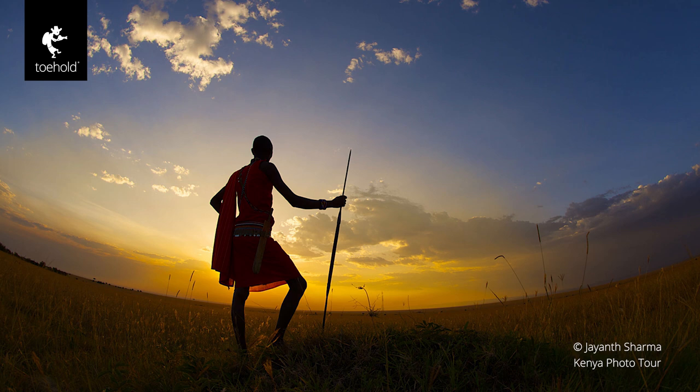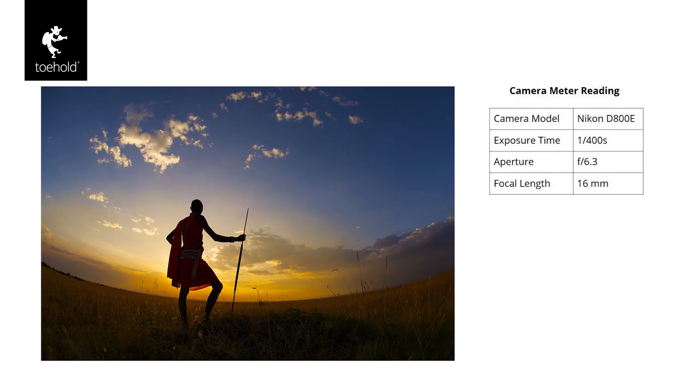Let's say I'm shooting a silhouette of a Maasai warrior against the sky and the camera's exposure is not satisfactory — I don't have to go to manual mode to make changes. Let's look at this picture shot at f/6.3 on a Nikon D800E with a 16mm fisheye lens at a shutter speed of 1/400th of a second according to the camera's meter. What if I want the sky to be darker? I have to increase the shutter speed to let less light into the sensor, thus darkening the shot.